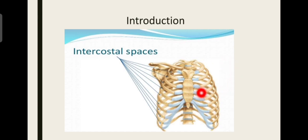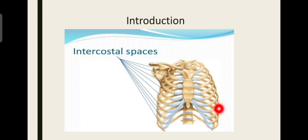There are 7 true ribs, 3 false ribs, and 2 floating ribs. True ribs connect from the vertebra to the sternum directly, and false ribs connect with the vertebra to the sternum by merging with another costal cartilage — that is, the 8th, 9th, and 10th ribs connect with the sternum through the 7th costal cartilage. The 11th and 12th ribs are called floating ribs because they don't connect to the sternum. So we have a total of 11 intercostal spaces.